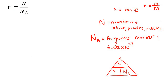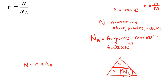So for example, if you want to calculate N — the one at the top — then the two at the bottom are next to each other, so you multiply them. You would say N equals small n multiplied by Avogadro's number. They would actually never really ask us to calculate Nₐ itself, so let's not worry about that one.